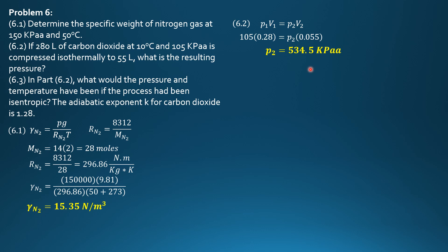Then in part 6.3, what would the pressure and temperature have been if the process had been isentropic? The adiabatic exponent K for carbon dioxide is 1.28. So we use P1V1 raised to K equals P2V2 raised to K. That's the equation where K is 1.28 given here.